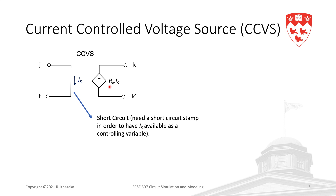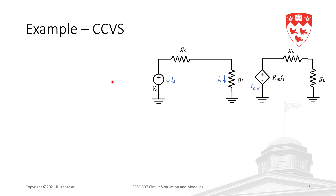In order for us to have this current as one of our unknown variables in the vector x, we need to define a short circuit in series with that branch. So typically we have a short circuit between j and j-prime; the current in this short circuit is is, and the voltage source value is rm×is. We are going to develop this stamp using an example.